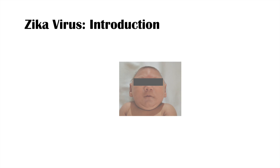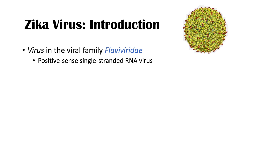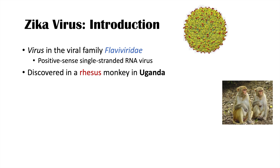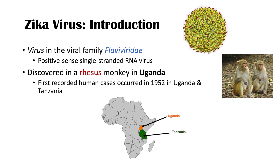The Zika virus can cause a viral infection that leads to neurological birth defects. It is a virus in the family Flaviviridae — a positive-sense, single-stranded RNA virus — and it was originally discovered in rhesus monkeys in Uganda. The first recorded human cases occurred in 1952 in Uganda and Tanzania.